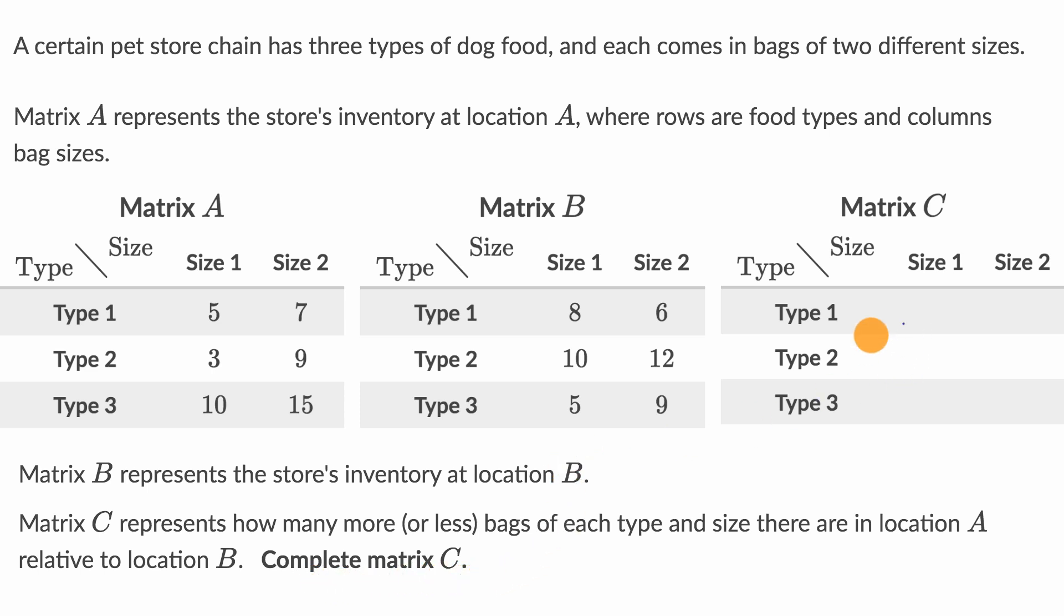So pause this video and see if you can have a go at that. We need to fill in the entries here of matrix C. Now let's do this together. Matrix C represents how many more bags of each type and size, there are in location A relative to location B.